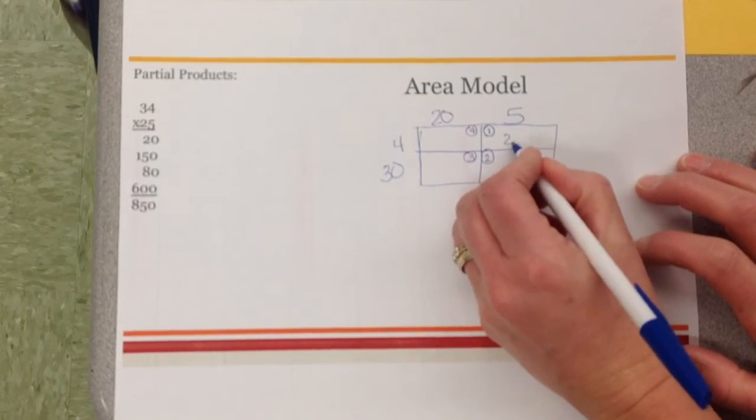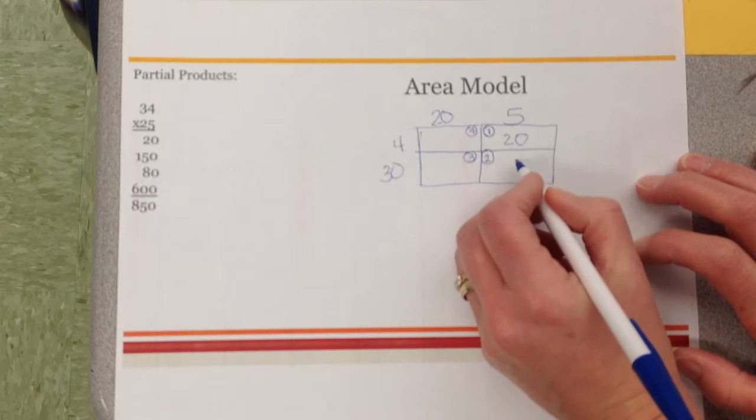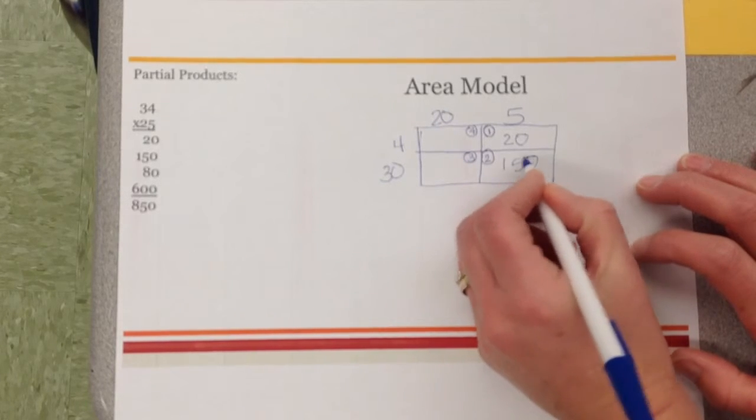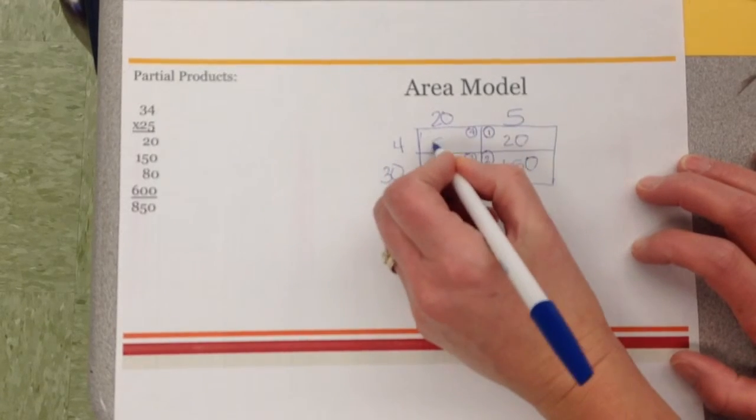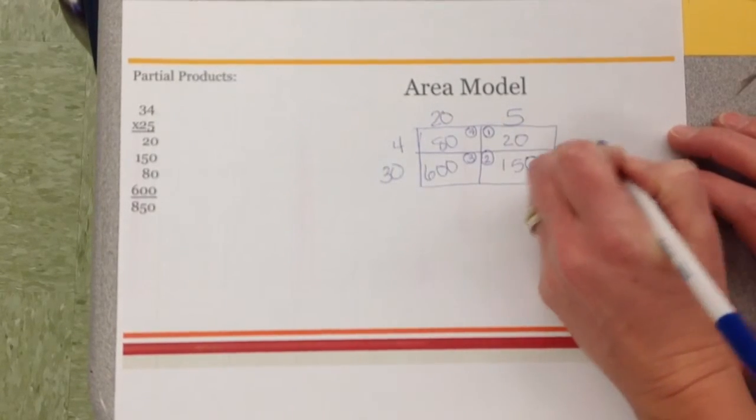Four times five is 20. 30 times five is 150. 30 times 20 is 600. Four times 20 is 80, and then you would have done the same thing.